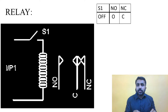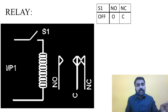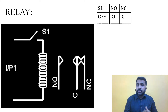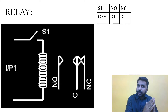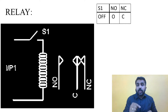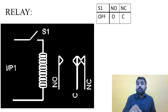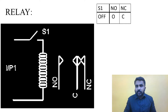When I give 24 volts to the coil, EMF is generated and the common terminal is attracted toward the normally open terminal. So if I give 230 volts to the common terminal, it will initially pass to the normally closed terminal — but once the coil is energized, the 230 volts will pass to the normally open terminal instead.